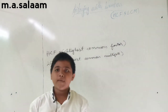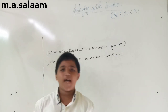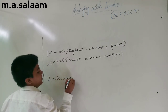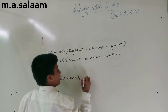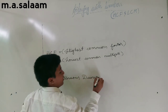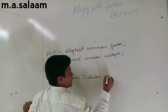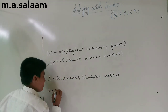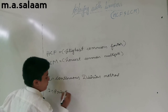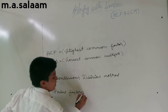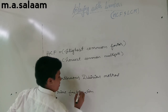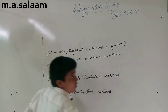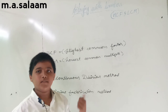We have two methods to find the HCF of any number. The first one is the continuous division method and the second one is the prime factorization method. So let's take an example that will help you understand these two methods.